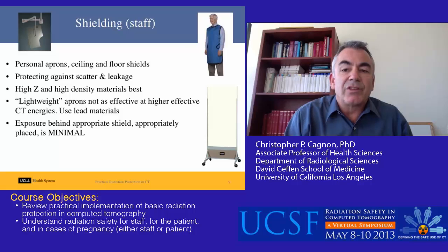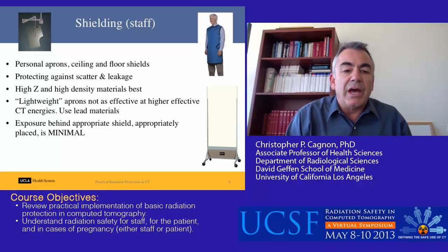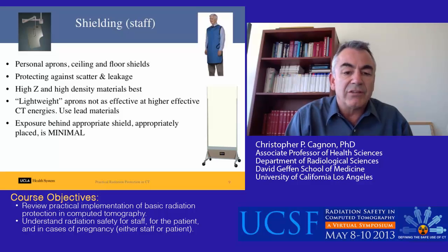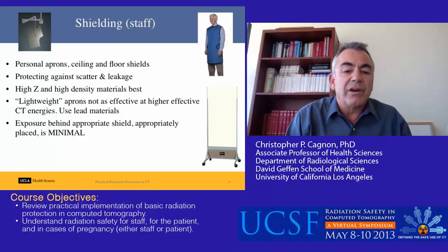We have to talk about shielding for the staff specifically. Shielding can consist of personal lead aprons, ceiling-mounted shields, and rolling floor shields — all for protecting against scatter from the patient and leakage from the x-ray tube assembly. High atomic number or high-Z, high-density materials work best. I caution against using lightweight aprons; they're not as effective at the higher energies used in CT, such as 120 kV. These materials use non-lead combinations — tin, barium, antimony — whose K-edge is not as effective at these higher energies. We recommend lead materials for CT shielding.